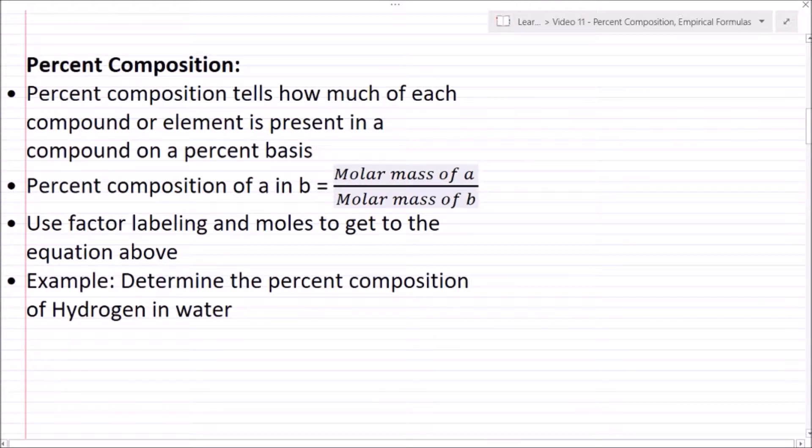A quick example: determine the percent composition of hydrogen in water. So I know my molar mass of H is going to be 1. My molar mass is 18 grams. Now it's also important to note that I have two moles of hydrogen per one mole of water, so here this is going to be 2 over 18 - I'm sorry, this should be 18.01 - and then this is all going to come out to give me 11.1 percent. And so that's how you do percent composition.